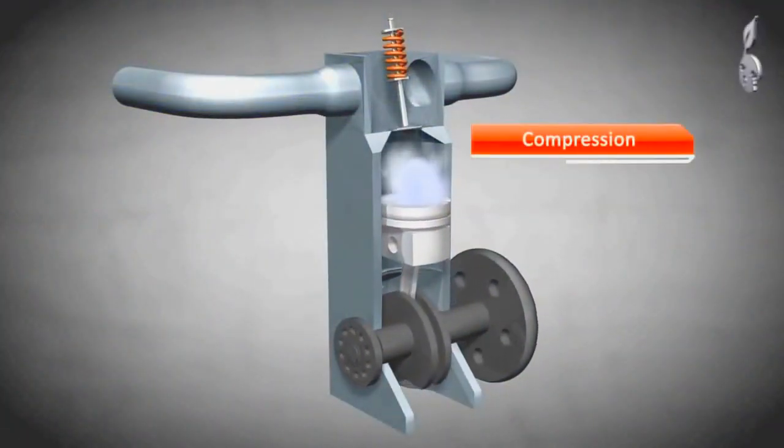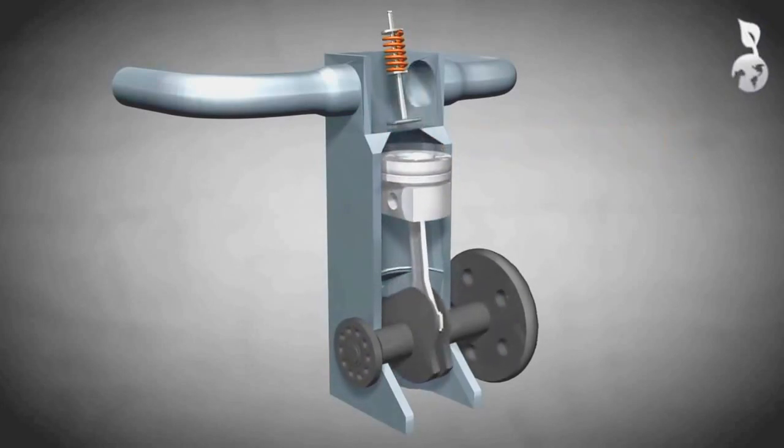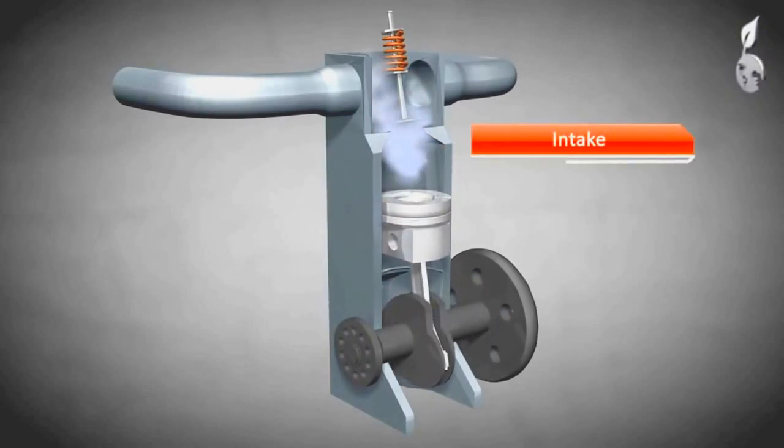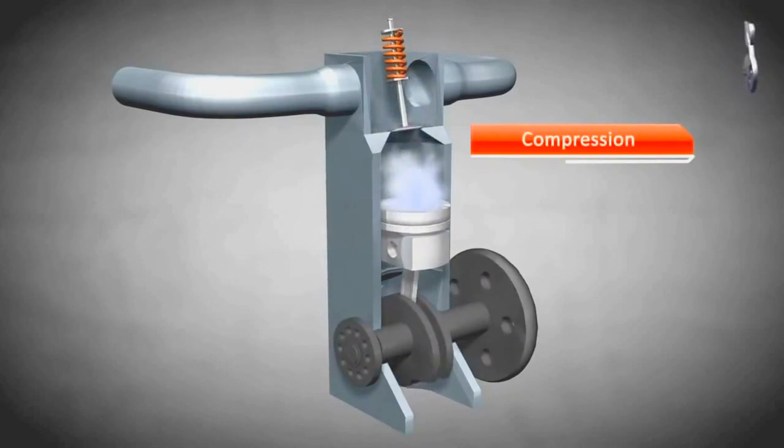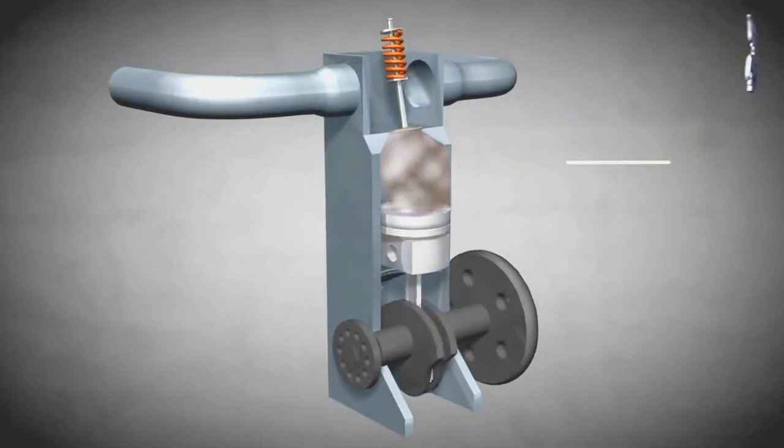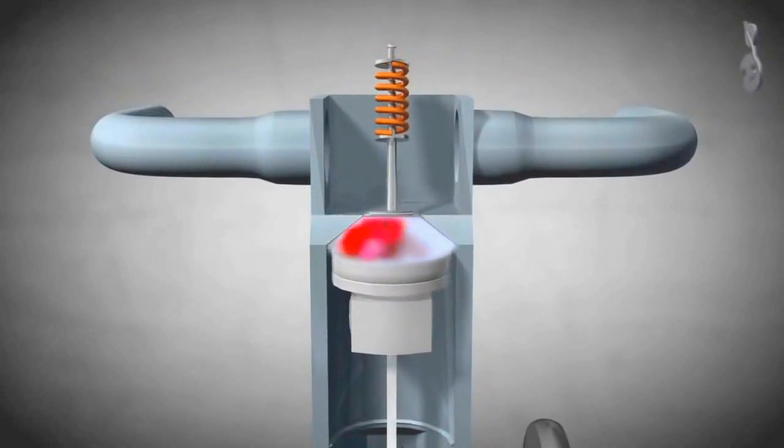In a standard four-stroke diesel engine, air is forced into the cylinder by atmospheric pressure. This is the reason why this kind of engine is known as a naturally aspirated engine.